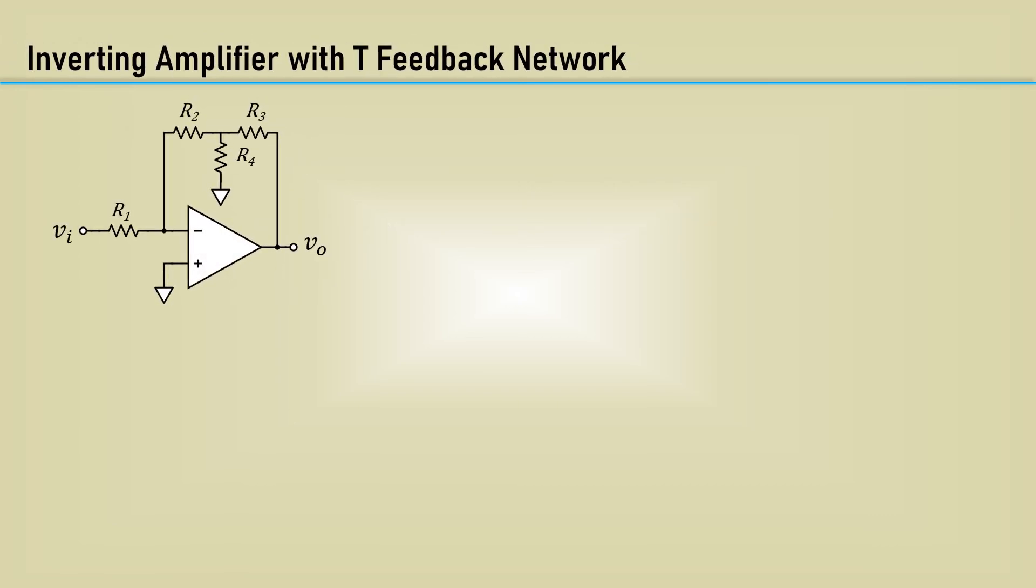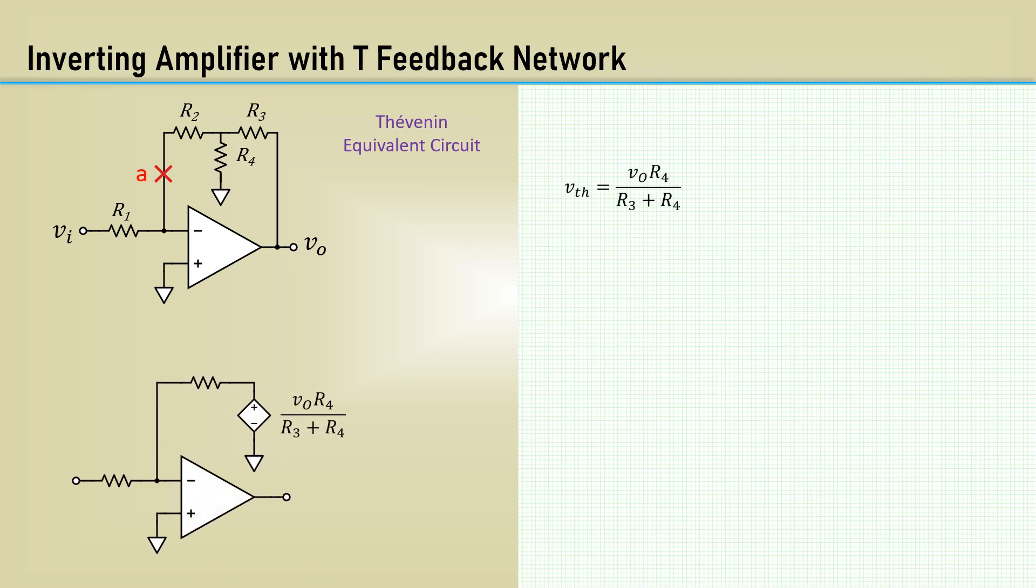To fix this problem, we can make use of the inverting amplifier with a T-network feedback. It can be used to obtain a high gain without a small value for R1 or a very large value for the feedback resistor. We can use the Thevenin theorem to replace R2, R3, and R4 with a single resistor and a voltage source. If you recall how that works, the Thevenin voltage is the open circuit voltage at the output, here at point A, which is the voltage divider R3 and R4, sourced by VO. To find the Thevenin resistance looking back through A, with the voltage source replaced by a short circuit, which is R2 plus the parallel combination of R3 and R4.